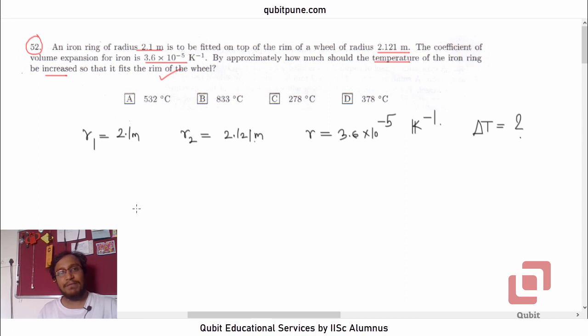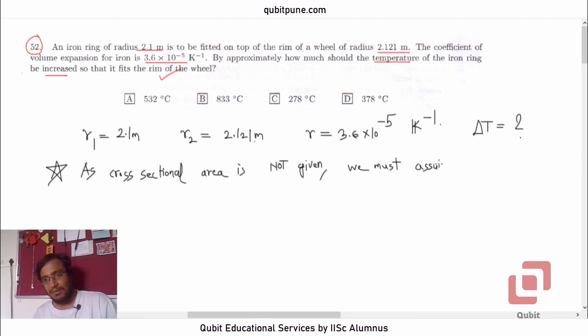Because they have not given us the cross sectional area, let us just assume that whatever change is going to happen will happen only in the radius. And that is important. I think we must specify it. As cross sectional area is not given, we must assume that only R changes. Not radius of the material of the ring, but radius of the ring itself. Only R changes.